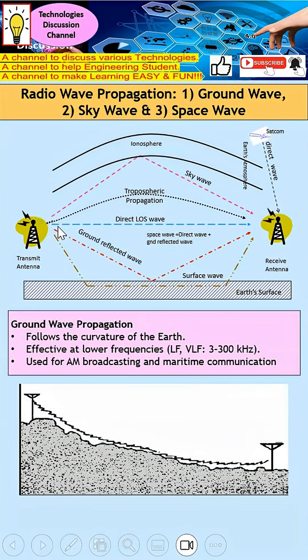Besides line of sight, we also have the ground refracted wave, which is also classified under space wave. In short, space wave equals the direct wave plus the ground refracted wave. The ground refracted wave can cause phase shift, which becomes a significant issue for space wave.